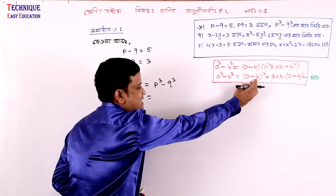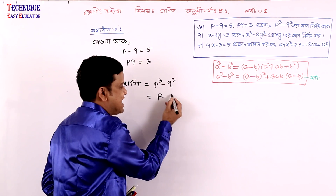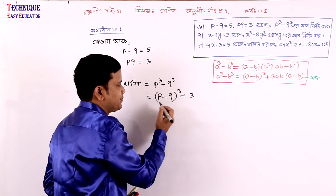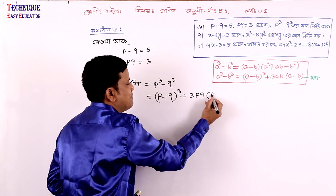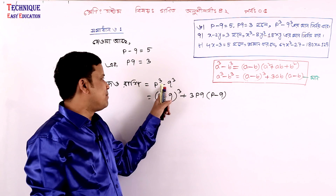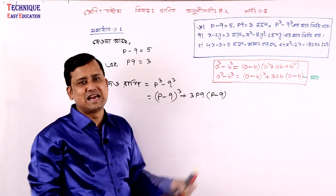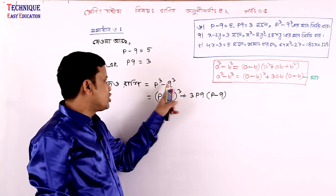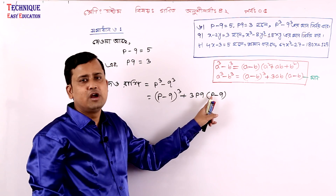So this is the value of q. The value of p minus q whole cube, a minus b whole cube plus 3ab, meaning pq into a minus b, meaning p minus q. So a cube minus b cube equals a minus b whole cube plus 3ab into a minus b, where a is p and b is q, giving p cube minus q cube.